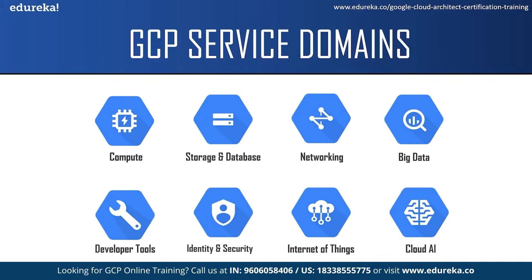GCP also provides all the tools developers and development teams need to be productive while writing, deploying, and debugging applications hosted on Google Cloud. The next service domain is Identity and Security, which lets administrators authorize who can take actions on specific resources, giving you full control and visibility to manage Google Cloud resources. Next is Internet of Things — GCP provides an intelligent IoT platform which is scalable, fully managed, and integrated. It lets you connect, store, and analyze data at the edge and in the cloud. The next service domain is Cloud AI — GCP provides fast, scalable, and easy-to-use AI offerings including AI platform, video and image analysis, speech recognition, and multi-language processing.